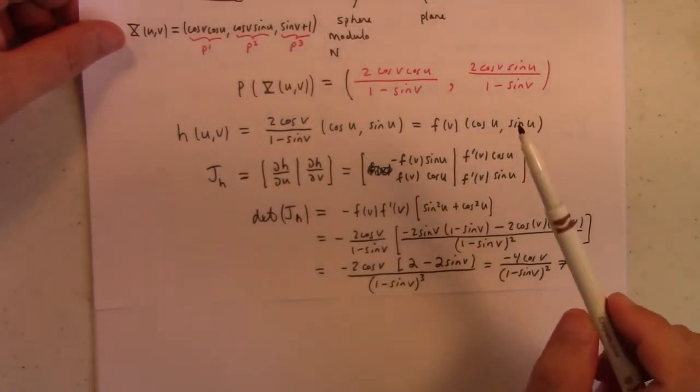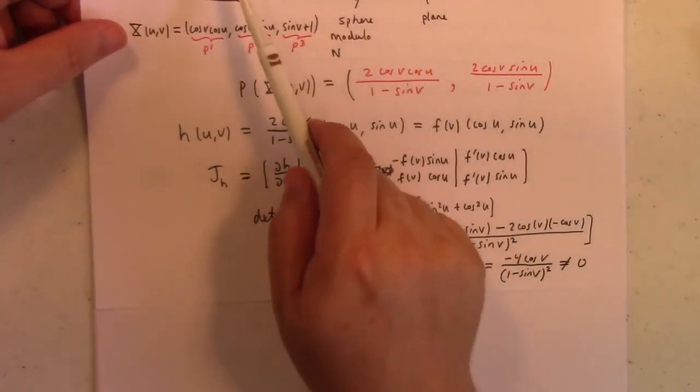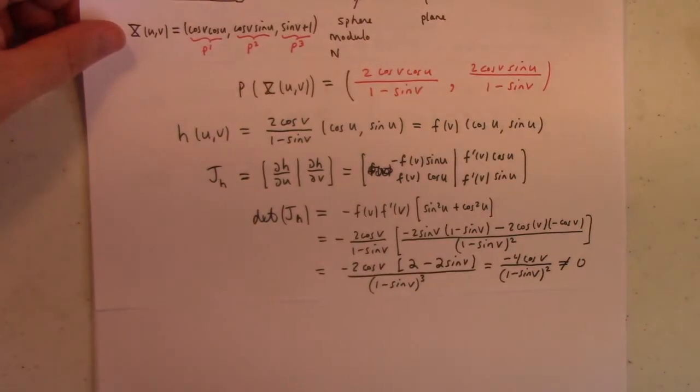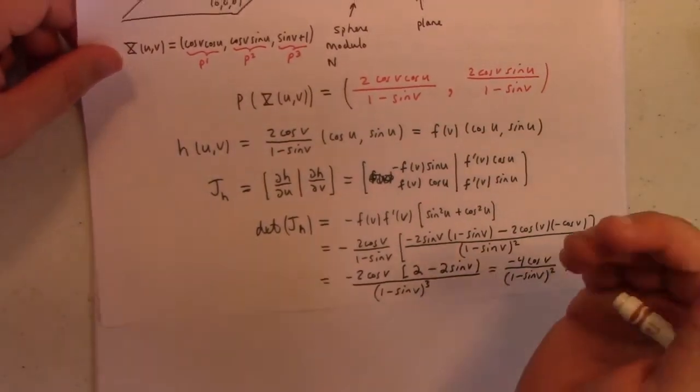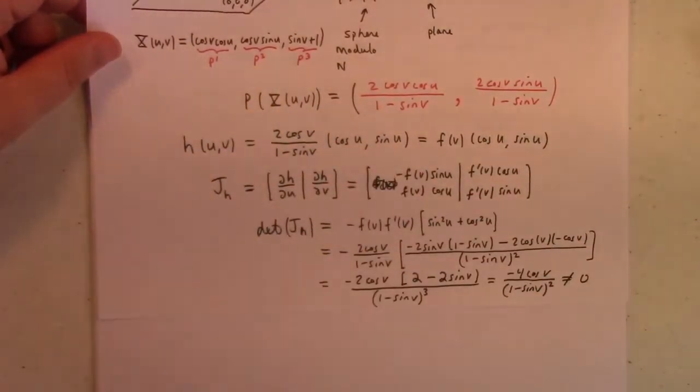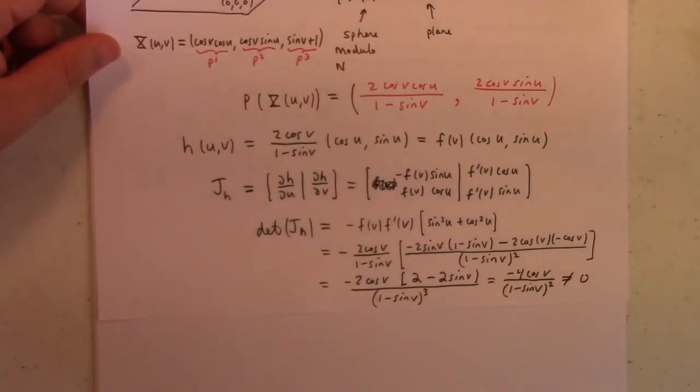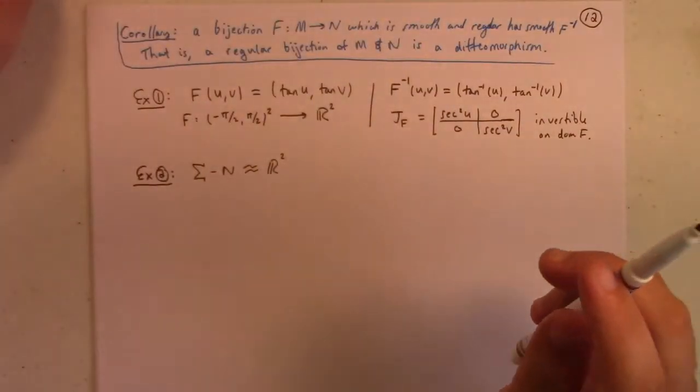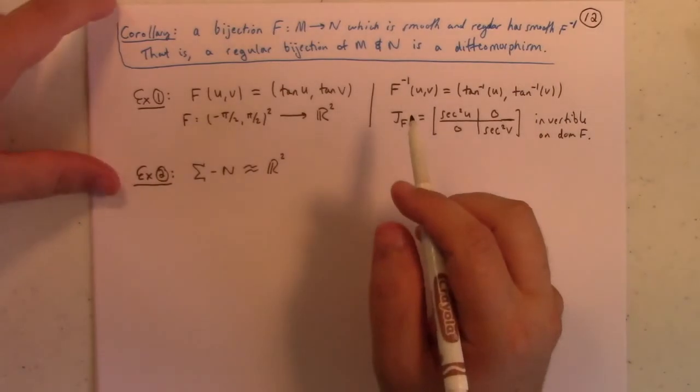So, whatever I was complaining about before about not having injectivity at the south pole must be missing something. Maybe it has to do with the fact this chart doesn't cover the whole sphere at once. I'm not sure. But, I definitely have regularity for every point except for the south pole. The south pole is still a little bit of a sticky point for me.